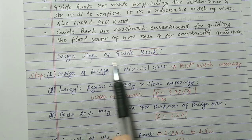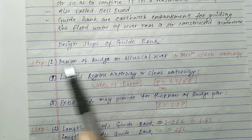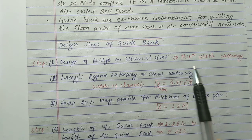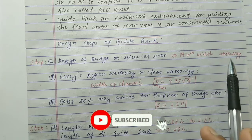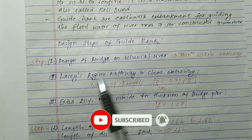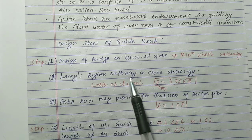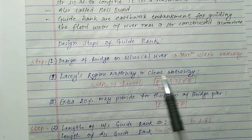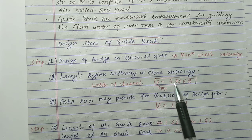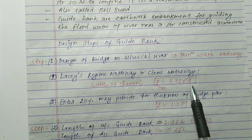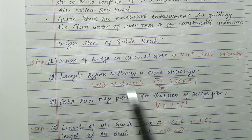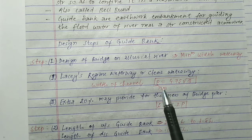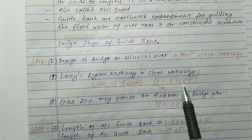Now let's see the design steps of guide bank. In the very first step, we have to determine the minimum width of waterway for the bridge over the river. For this we use Lacey's regime waterway theory. The clear waterway is calculated as P = 4.75 √Q, where this formula is taken from Lacey's regime theory.